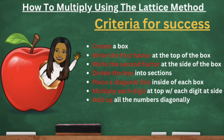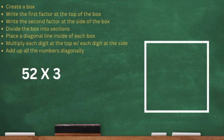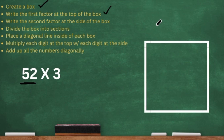I know that's a lot of steps, but I'm going to show you guys exactly what I'm talking about. Let's jump right into the lesson. So we have 52 times 3. This is our first equation. Our CFS at the top says to create a box. I already drew a box on the board. And then it says write the first factor at the top of the box — so our first factor is 52.